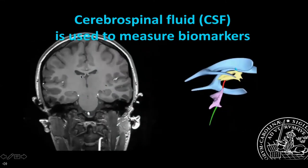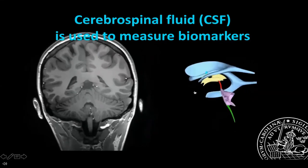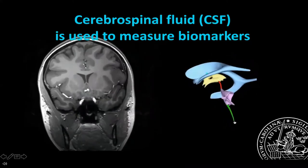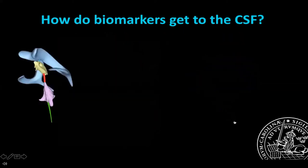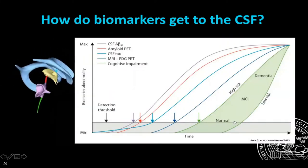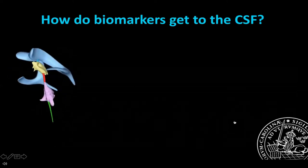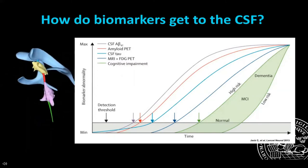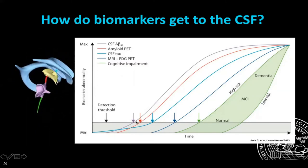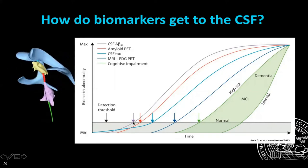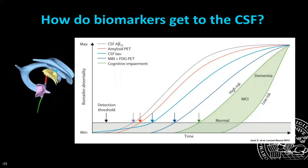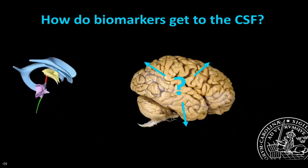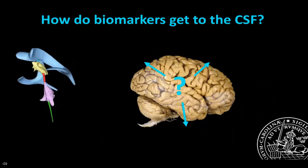CSF is produced in the choroid plexus in the ventricles—this is the ventricular system. Most people know CSF as a way to measure biomarkers. But how do the biomarkers actually get to the brain? You can see here the progression of Alzheimer's disease, and the first detectable event is the presence of amyloid beta in the CSF. So that begs the question: how do these biomarkers produced inside the brain actually get to the CSF?